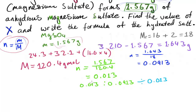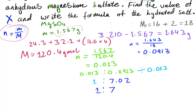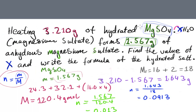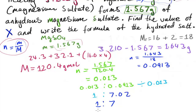Dividing 0.013 by 0.013 gives one. And 0.0913 divided by 0.013 gives 7.02, which rounds to the nearest whole number as 7. So the ratio is 1:7, meaning x equals seven — there are seven moles of H2O for every mole of magnesium sulfate.